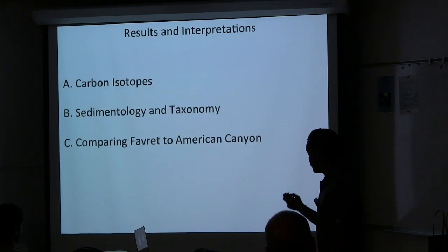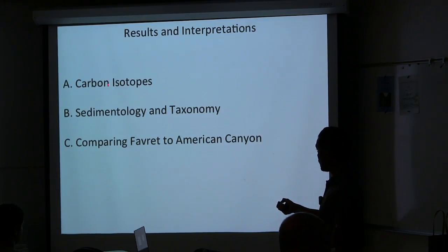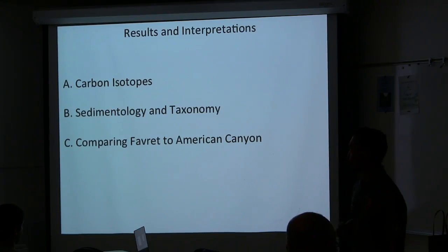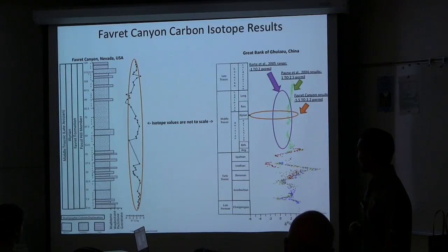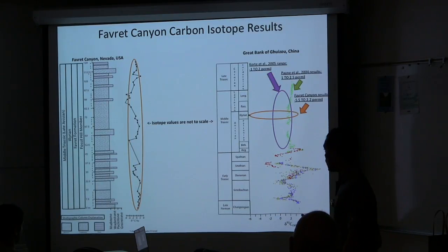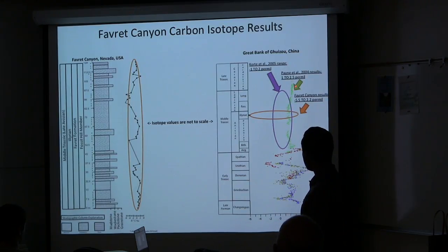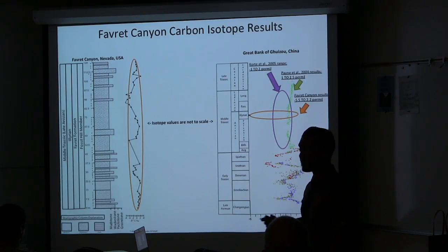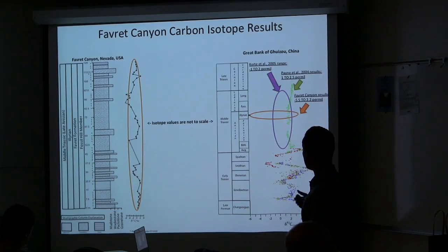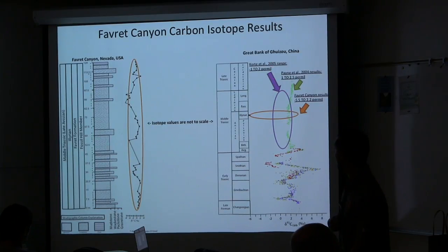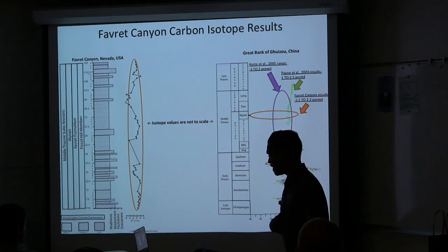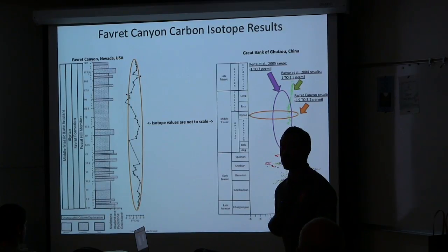Results will begin with carbon isotopes, then sedimentology and taxonomy, and finally a comparison of Fabric to American Canyon. Fabric Canyon's carbon isotope results range from 5.5 to 2.2 per mil. Payne's results for the Middle Triassic range from 1 to 2.5 per mil, and Cortet's results range from negative 1 to 2 per mil. Fabric Canyon results vary in range more than Payne and Cortet.